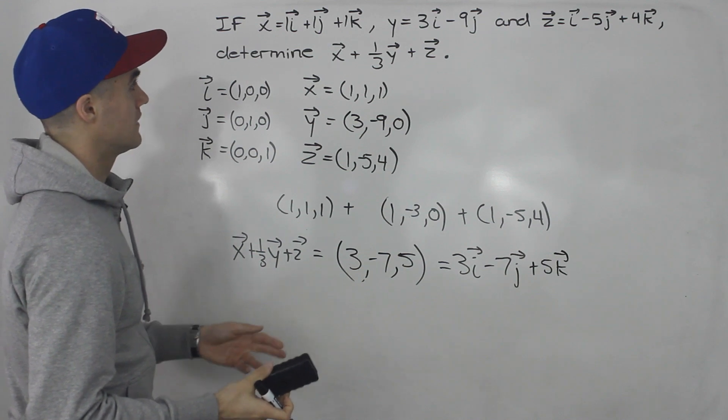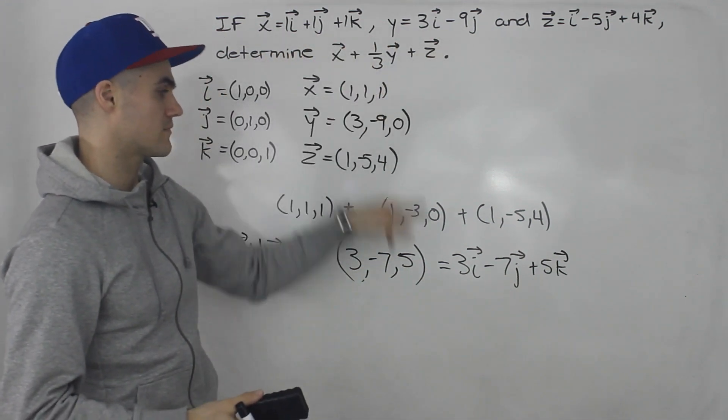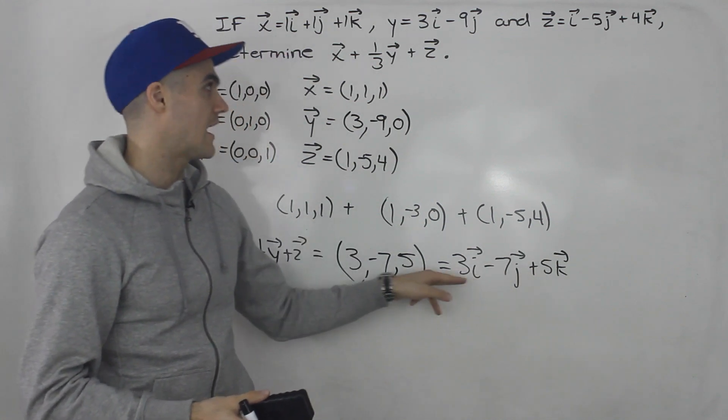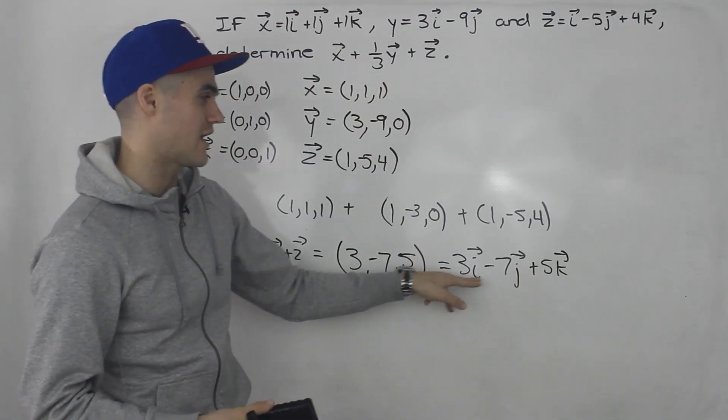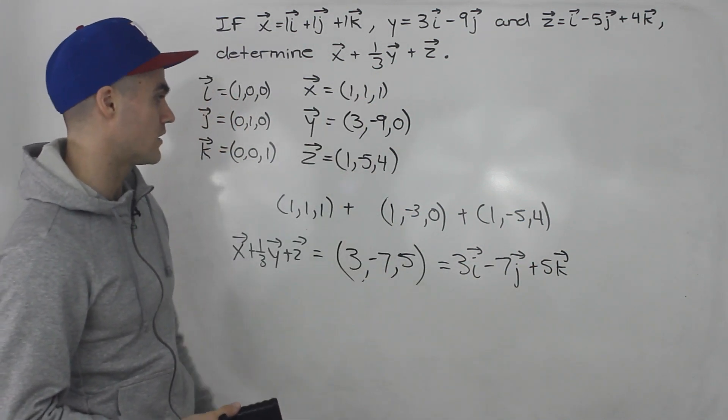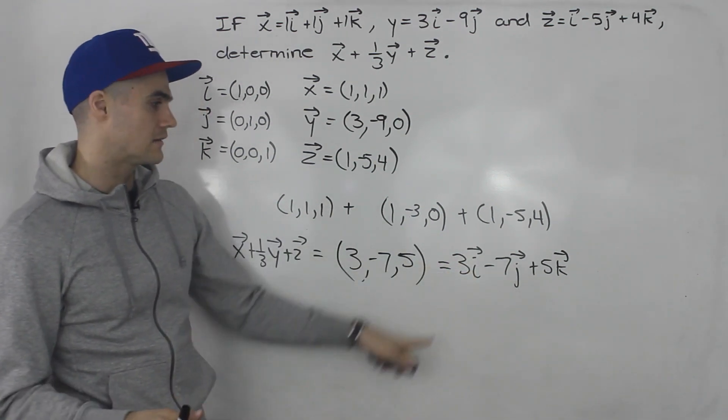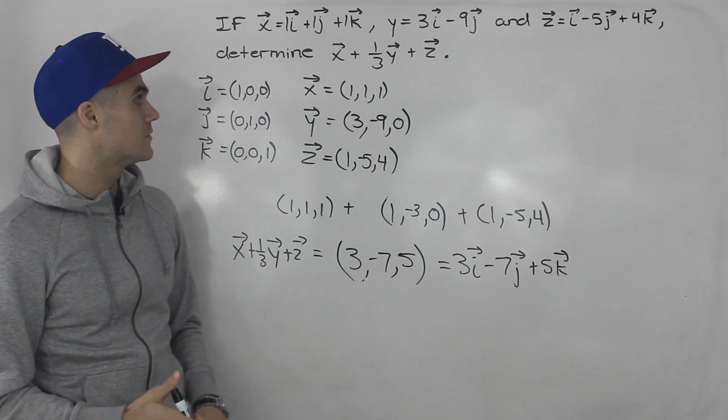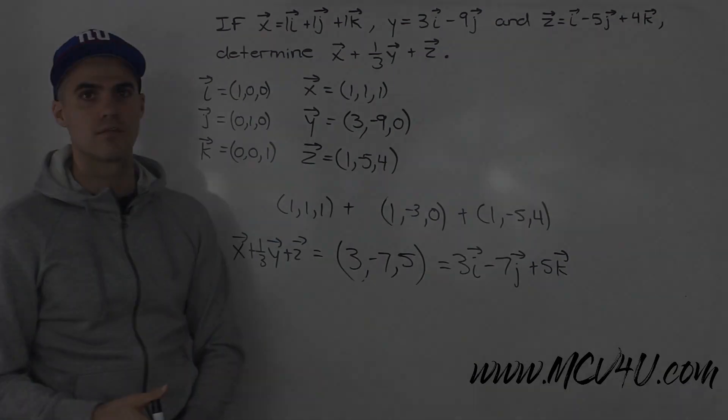And then another way you could have done this is you could have just plugged in these values here and you would have ended up with this. I just don't like to continually write these arrows on top of i, j, and k. So I like to put it in coordinate form first, do it like that. And then if anything, I could convert it at the end like I did there. But yeah, that is the final answer. Either this or that.